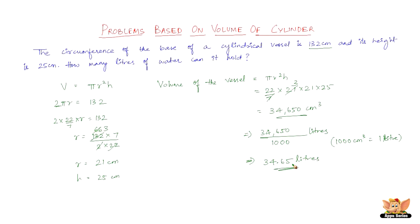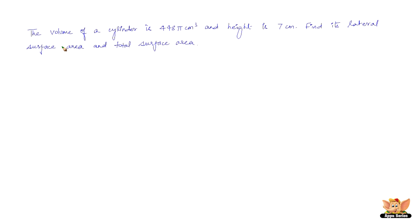The vessel can hold 34.65 liters of water. Now let us quickly solve another problem. The volume of a cylinder is 448π cm³ and its height is 7 cm. You don't have to get confused here because the volume is given in terms of pi — they just haven't substituted the numerical constant for pi and have retained it as pi. This is a valid volume. To find the specific volume, substitute pi = 22/7. Find its lateral surface area and total surface area.